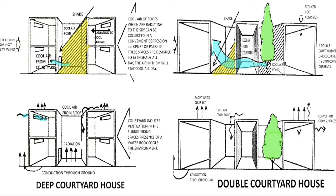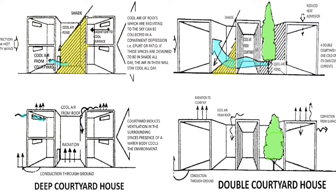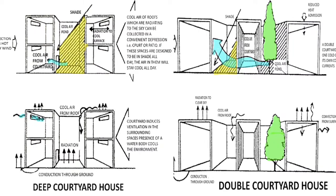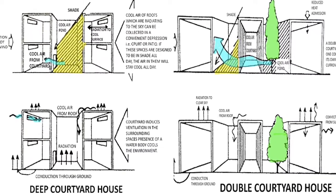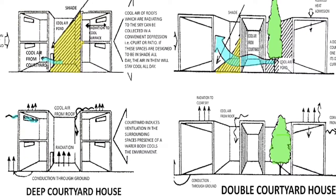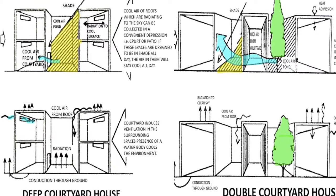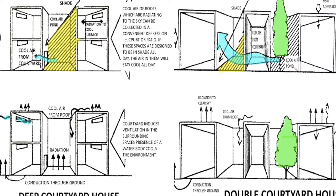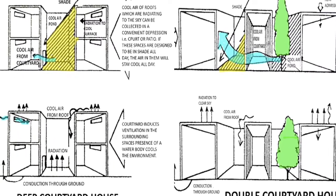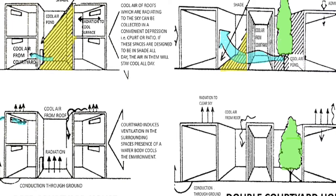So these are the 10 points which you have to follow for designing a passive home in this composite climate. That's all for this video. If you like this video give a thumbs up. If you find this video informative, share it with others and subscribe to our channel. Thanks for watching.